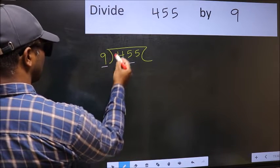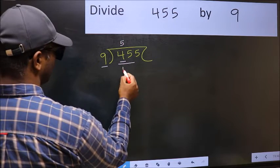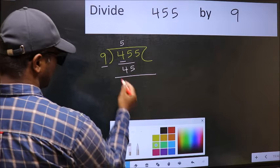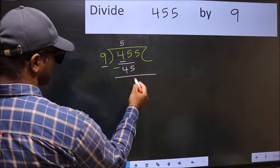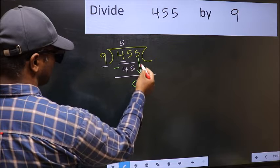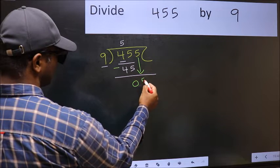When do we get 45 in 9 table? 9 fives 45. Now you should subtract. 45 minus 45 is 0. After this, bring down the beside number. So 5 down.